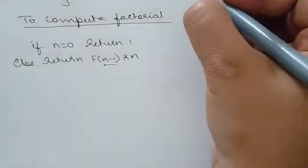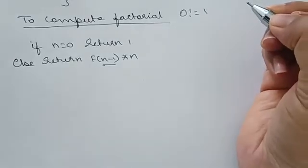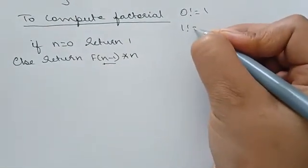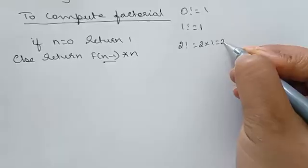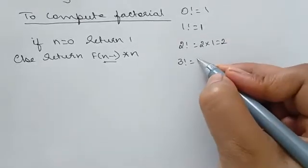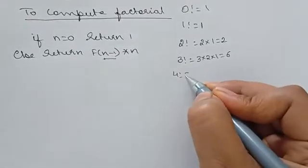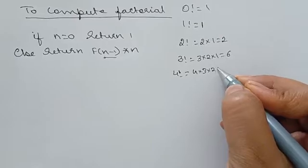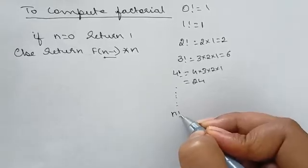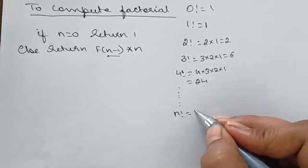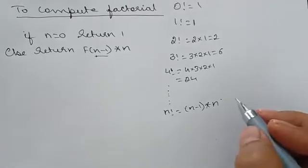You know 0 factorial equals 1, 1 factorial equals 1, 2 factorial is 2×1 = 2, 3 factorial is 3×2×1 = 6, 4 factorial is 4×3×2×1 = 24. Continuing this way, n factorial equals n × (n-1).